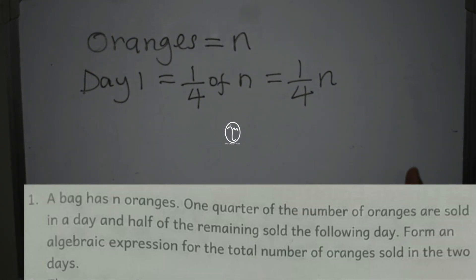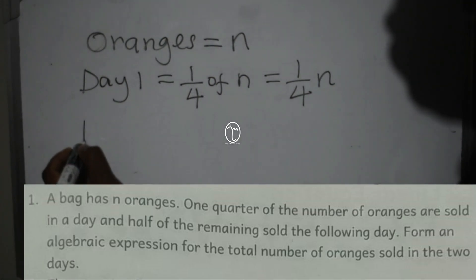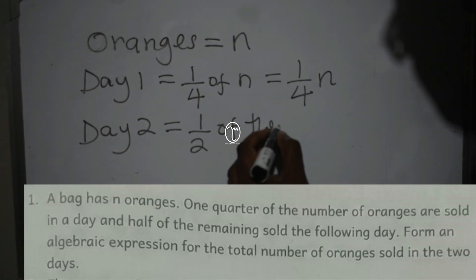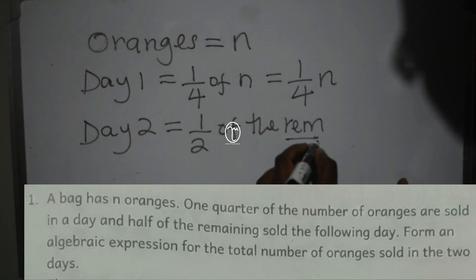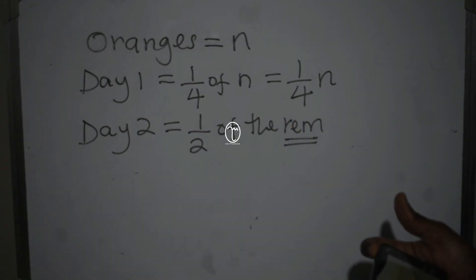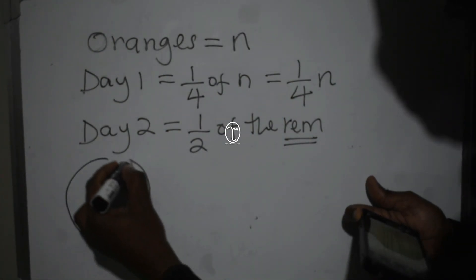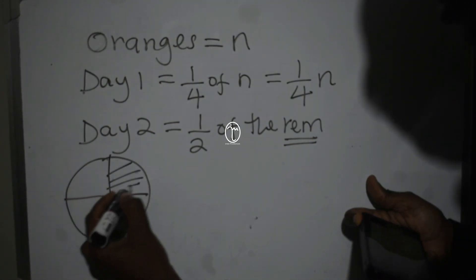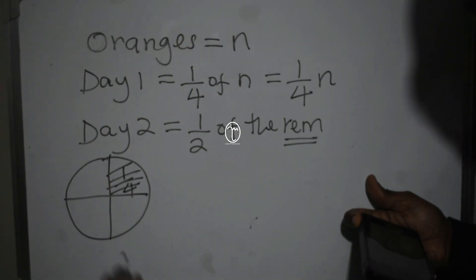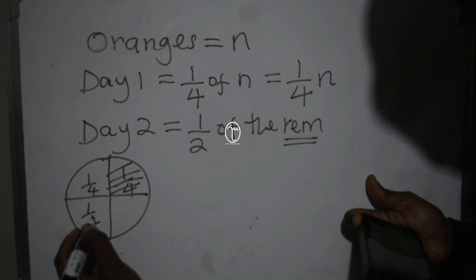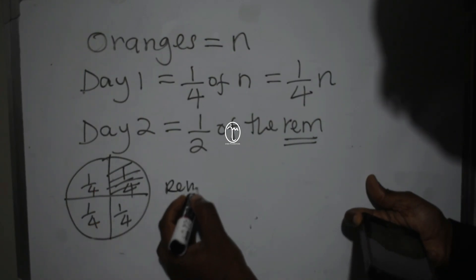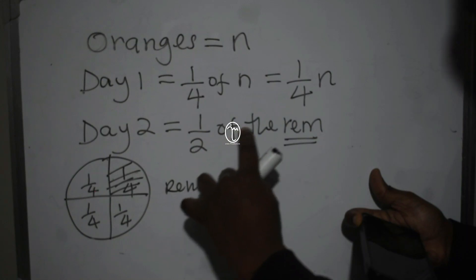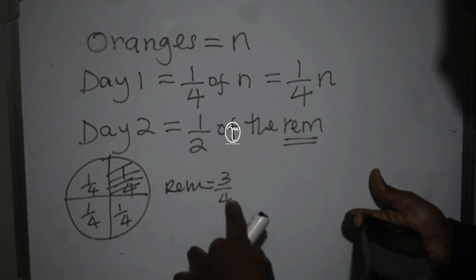Then half of the remaining sold the following day. So day two, he sold half of the remaining. We have to ask ourselves, what was the remaining number of oranges? I'll draw a circle here to represent the total number of oranges. In day one, he sold a quarter. So the remaining is three quarters.